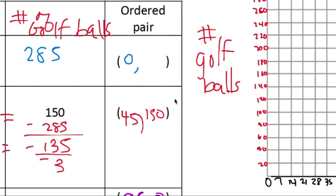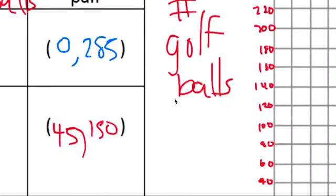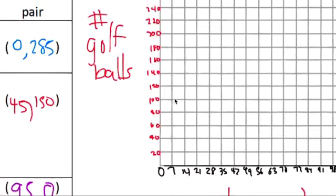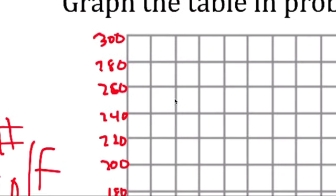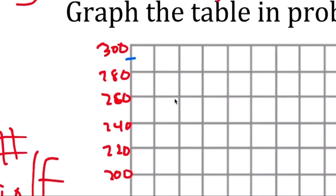290 is right there, 285 is right there. 285 is right there in the middle.